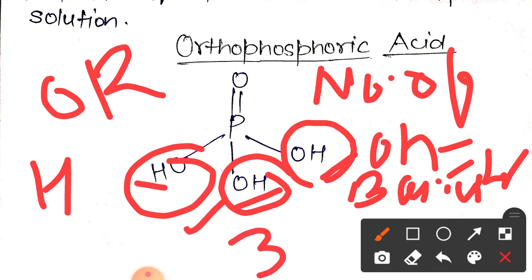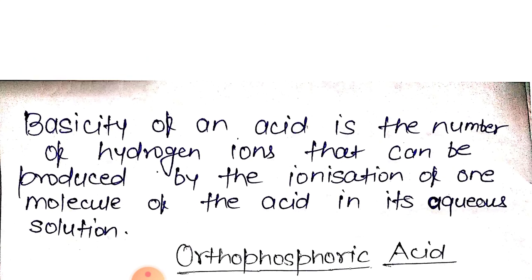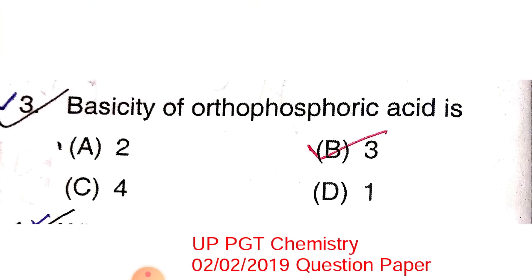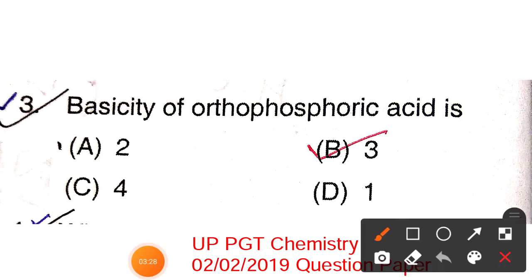So the basicity of orthophosphoric acid is 3, and option C (3) is the correct answer. Thanks for watching this video. Please like, share, and subscribe to my channel. Thank you.